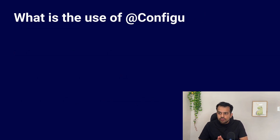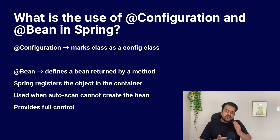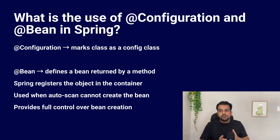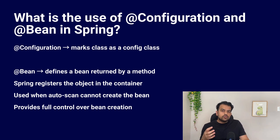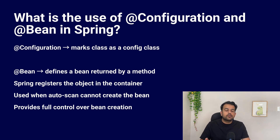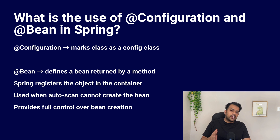Next question: what is the use of the @Configuration and @Bean annotations in Spring? @Configuration is a class-level annotation and @Bean is a method-level annotation. @Configuration tells Spring that this class is a configuration class. @Bean defines a bean inside that class on a method — Spring calls that method, gets the object, and registers it in the container. We use this when we want exact control over how a bean is created, especially when the bean is not automatically created by component scanning. The main thing to remember: @Configuration holds bean definitions, and @Bean creates and registers objects in the Spring container.